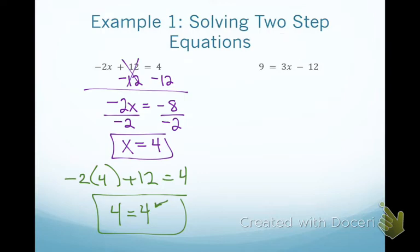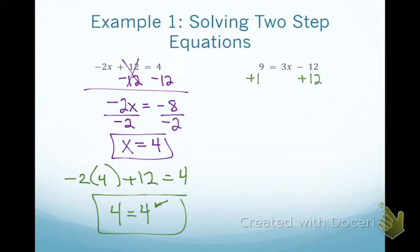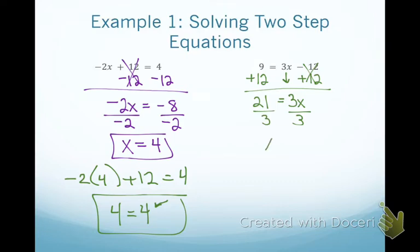Following the steps: which term do you move first — the 3x or the negative 12? Hopefully you said move the negative 12 first. The inverse of negative 12 is to add 12 to both sides. My 12s cancel, leaving just 3x. Now what's 9 plus 12? That's 21. Multiplication is connected to the variable, so I divide both sides by 3 to get x by itself. I get x equals 7 — and 7 equals x is the exact same thing, written either way.